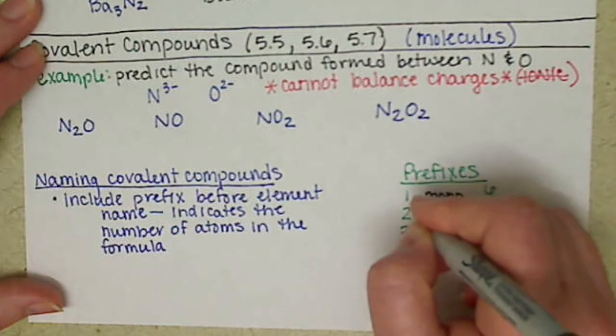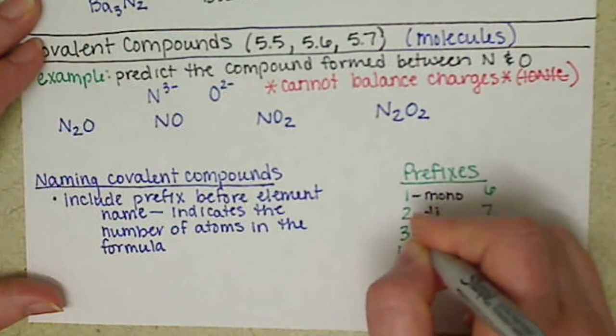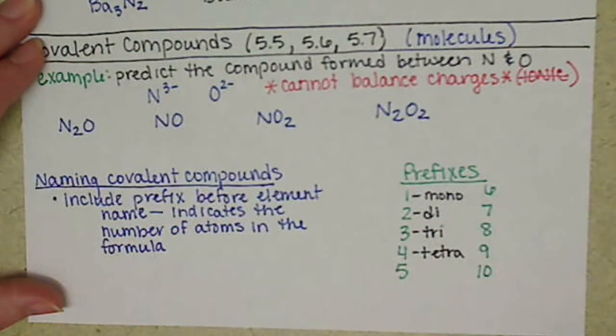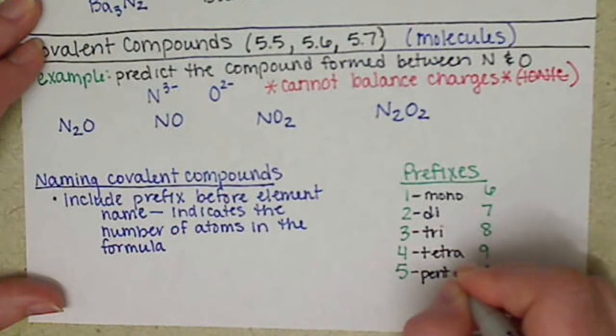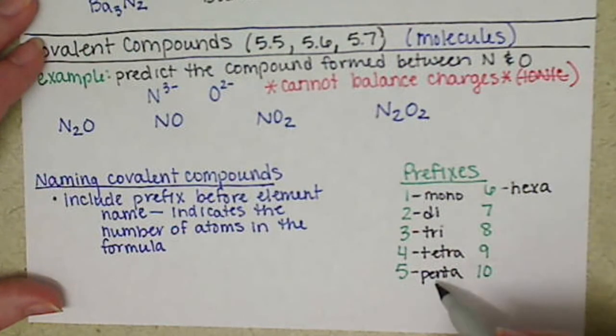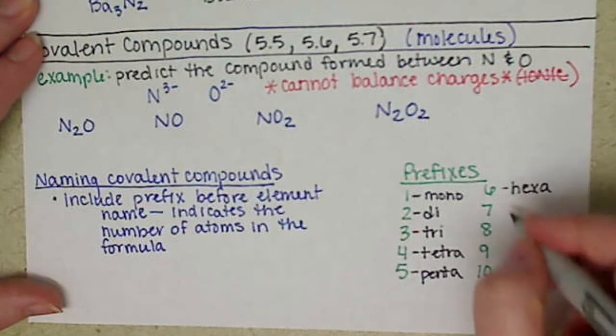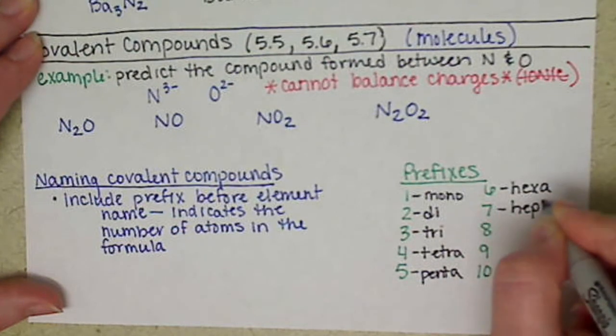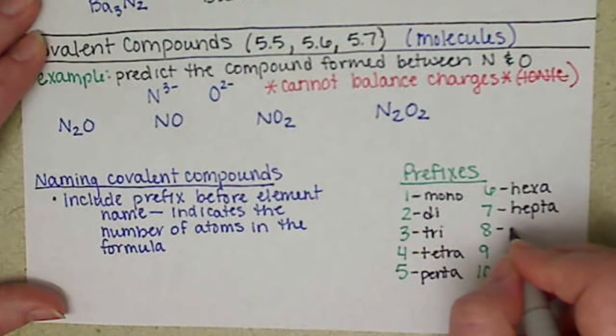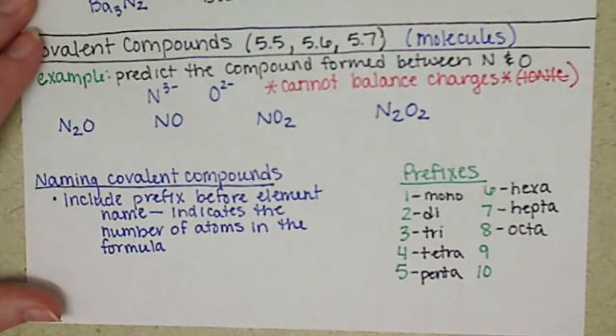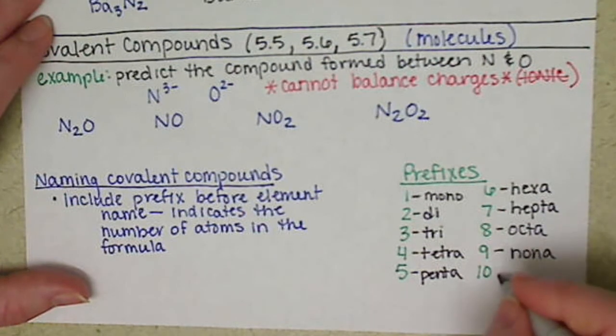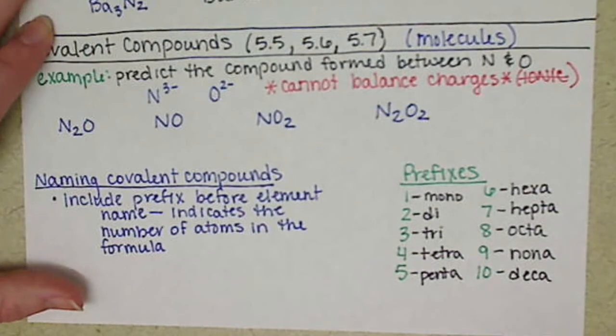So one is mono. Two is di. And we have tri and tetra. Then penta, hexa. And pentagon, hexagon, you've probably heard of those shapes. Hepta is seven. Maybe a new one that you haven't really heard much. Eight is octa, so octagon. Nine, nona, may not have heard of that one before. And ten is deca.